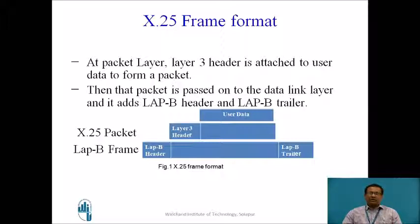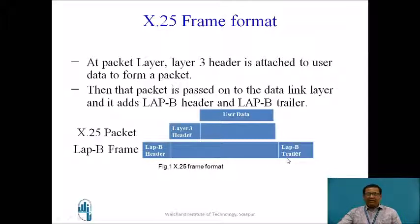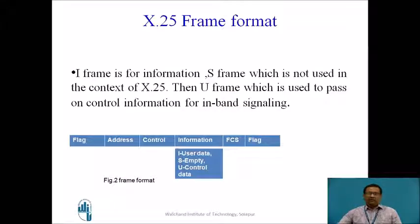Now let us discuss X.25 frame format first. This is Figure 1, which shows the X.25 frame format, wherein the user data at the packet layer of X.25, a Layer 3 header is attached. In the link layer, LAPB header and LAPB trailer is attached to this information. At the beginning there is a flag and also at the end there is a flag. In addition to that, address of source and destination is added.